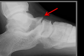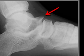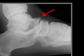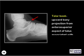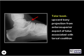What sign is this? It's a talar beak, which is that upward bony projection from the anterosuperior aspect of the talus that can be associated with tarsal coalition.